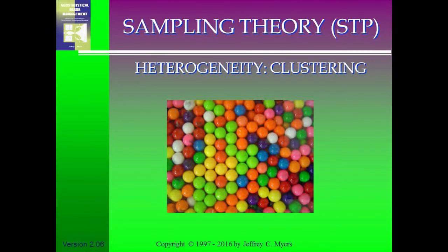Go into a candy store — gumballs, gummy bears, any type, different colors. It doesn't matter. You get groups: the yellow group, the green groups, the orange groups. But what happens if you're looking for the white ones or the green ones? You could miss them, or you could get a cluster of greens. It's kind of a nugget effect. This is what we deal with in the sampling scenarios. The good news is that we can manage this even by equations. The fundamental error has an equation by which we can manage the heterogeneity and quantify how much error is associated with the fundamental constituents.